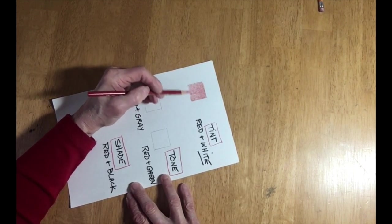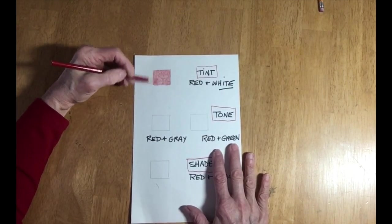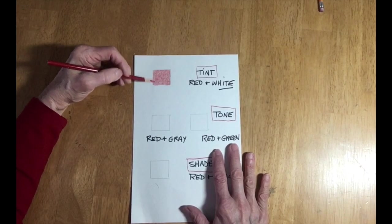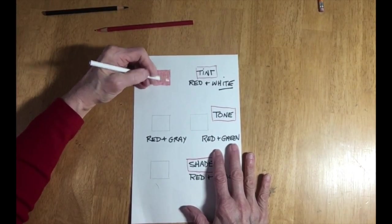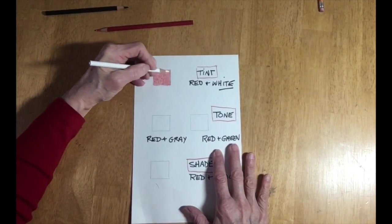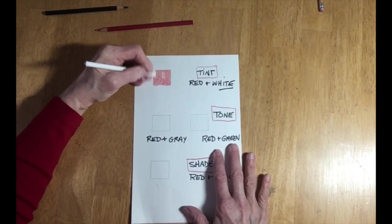The white colored pencil also acts as a burnisher by mixing the colors underneath it like you do when you use a blender, except with a blending pencil you are not adding additional color.